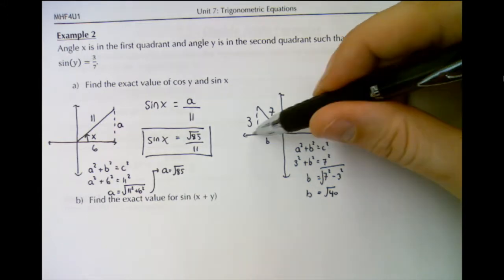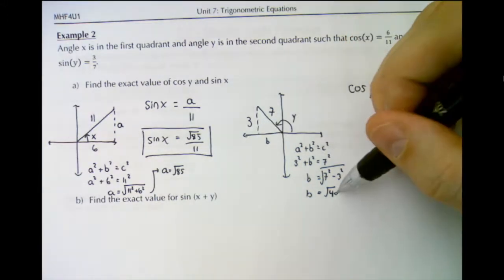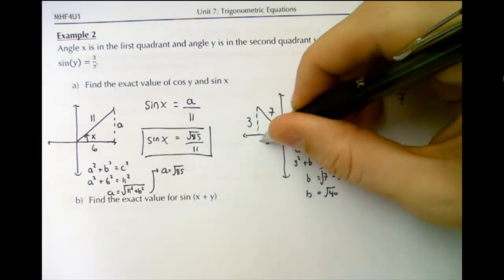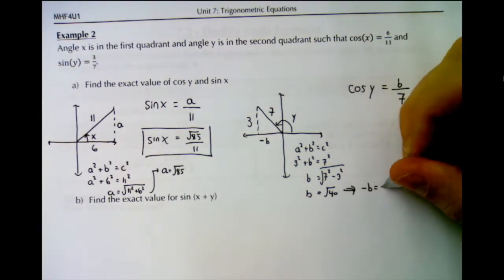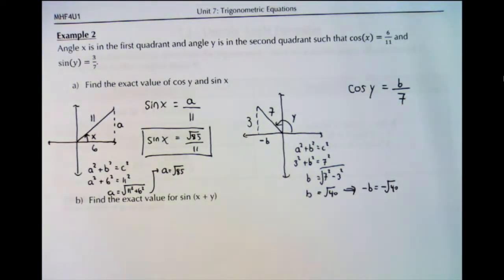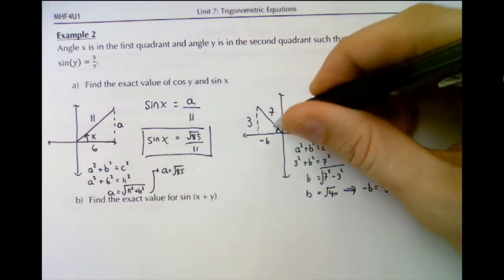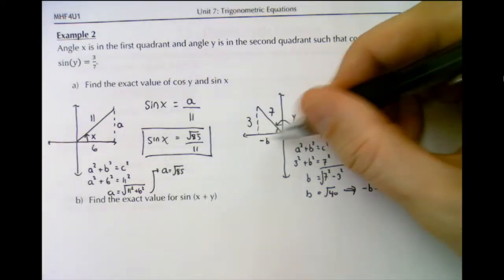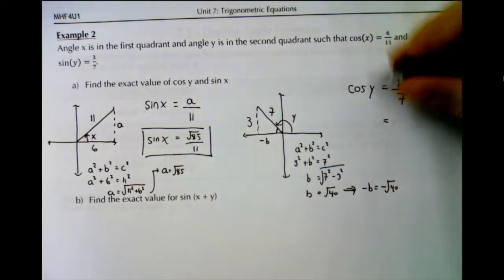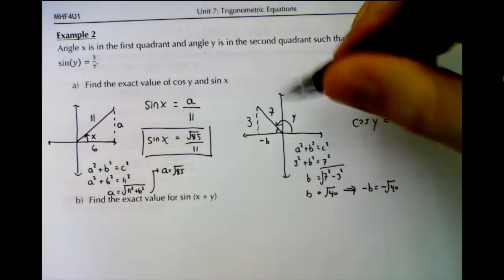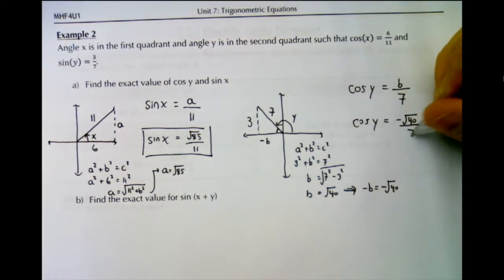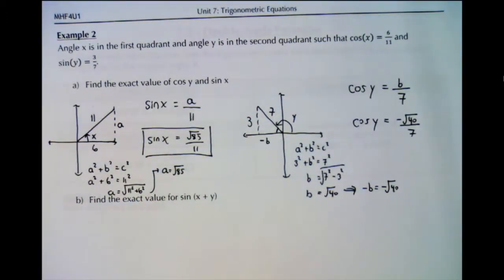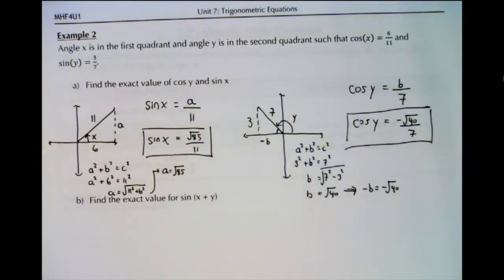However, b is to the left of zero, so we're actually looking for negative b. Because we've graphed this on a Cartesian plane and theta takes us into the second quadrant, the x-side or b-side is negative. So it's actually negative root 40. To find the exact value of cos y, since we're in the second quadrant where cosine is negative by the CAST rule, cos y is negative root 40 over 7.